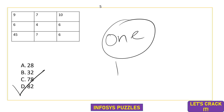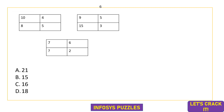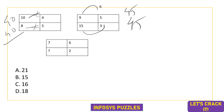There will be only one solution but multiple logics. Here: 10×4 = 40, 8×5 = 40 — multiplying elements from the first and second columns. So 9×5 = 45, and 15×3 = 45. Similarly 7×6 = 42, so multiplying with 21: 21×2 = 42. Option A is the correct answer.